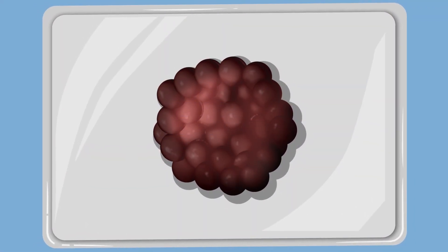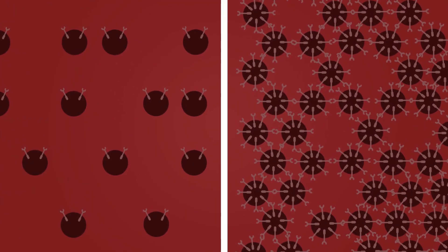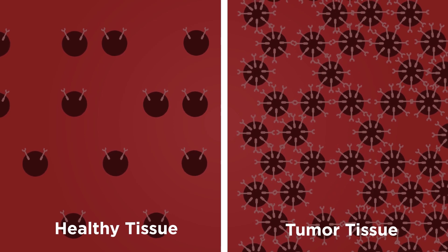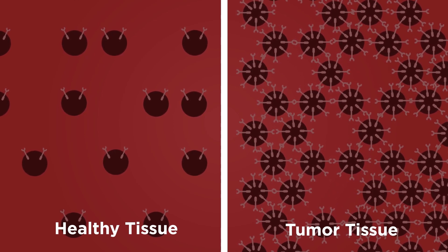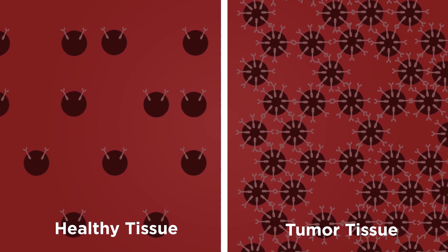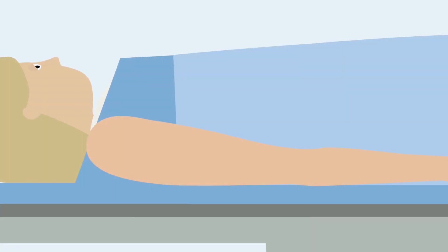These tracers bind to cancer-associated proteins on tumor cells. We have previously shown that members of the F-receptor family are specifically upregulated in colorectal cancer, whereas it is almost completely absent in surrounding normal tissue.